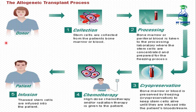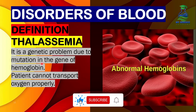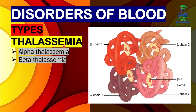Now let's discuss thalassemia. It is a genetic problem due to a mutation in the hemoglobin gene. The patient cannot transport oxygen properly because the mutated hemoglobin gene causes the production of abnormal hemoglobin, resulting in impaired oxygen transport.